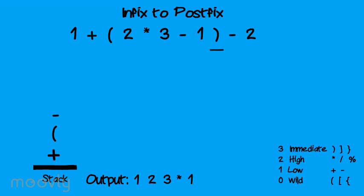When we come to a closing parenthesis, which has a priority of 3, we immediately pop from the stack to the output until we find a matching opening parenthesis. When we find the matching parenthesis, we pop it off the top of the stack and continue parsing, but we do not add it to the output. When we come to an operator with precedence equal to the top of the stack, we pop from the stack until we can add the operator. When we reach the end of the string, we pop all remaining elements off of the stack and into the output. The result is the string that remains in the output.